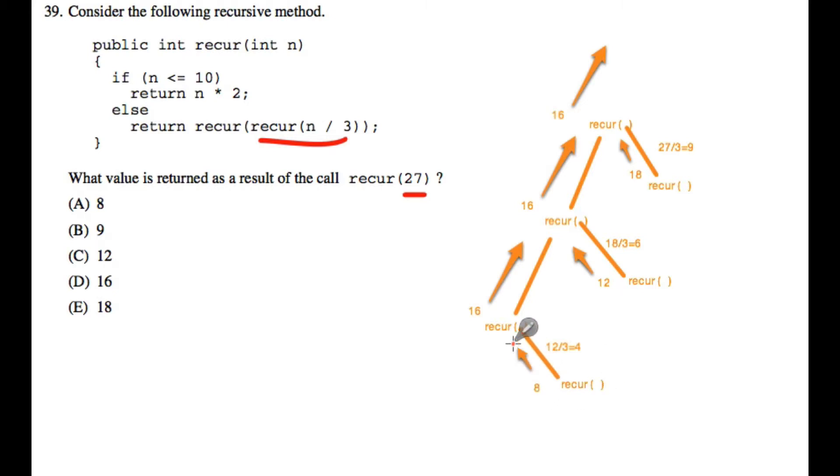And so when this one is called, when this version of recursion is called, we will hit the stopping condition. So it will return 16.